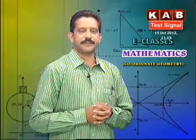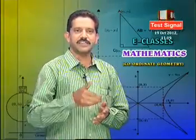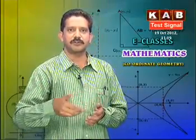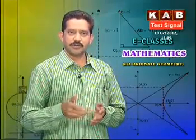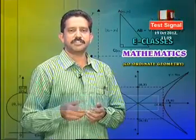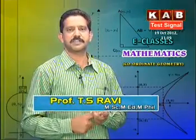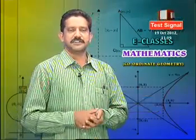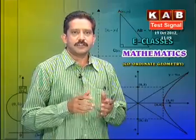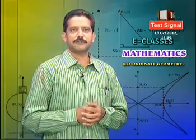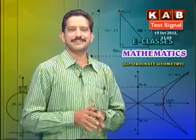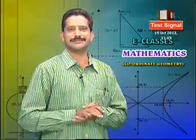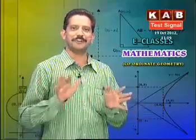In e-classes, we are giving you the ideas to score the full weightage. You have already seen what best we can do — Circles and System of Circles, Parabola, Ellipse, Hyperbola, and all these topics. The total weightage is 42 marks. To gain these marks, just sit at home and watch our KAB e-classes. That's enough — you get all 45 marks.